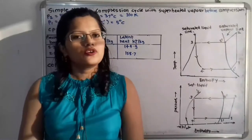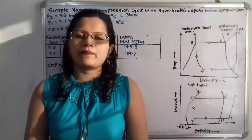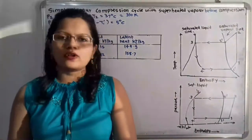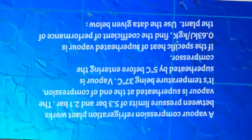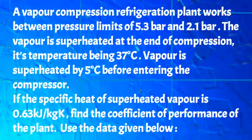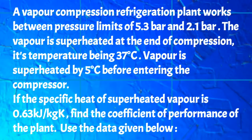Hello friends, this is Priyanka. Today we are going to solve a problem on vapor compression cycle with superheated vapor before compression. A vapor compression refrigeration plant works between pressure limits of 5.3 bar and 2.1 bar. The vapor is superheated at the end of compression, its temperature being 37 degrees Celsius. The vapor is superheated by 5 degrees Celsius before entering the compressor. The specific heat of superheated vapor is 0.63 kJ/kg·K.